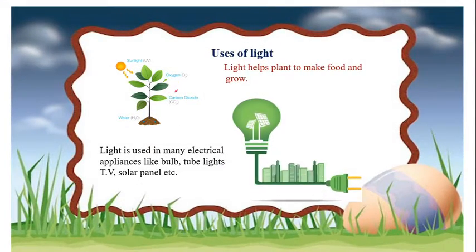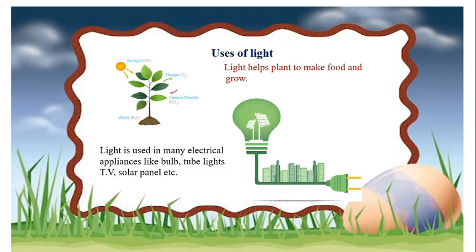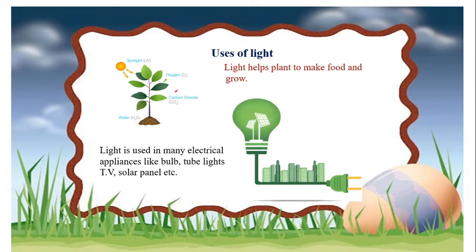Uses of light: Look at the first picture. Light helps plants to make food and grow. As you know, during daytime, the leaves of the plant, which contain chlorophyll, trap the sunlight. So, in the presence of sunlight, carbon dioxide and water help plants prepare their food, that is glucose. This process is called photosynthesis. It takes place in daytime due to the presence of sunlight.